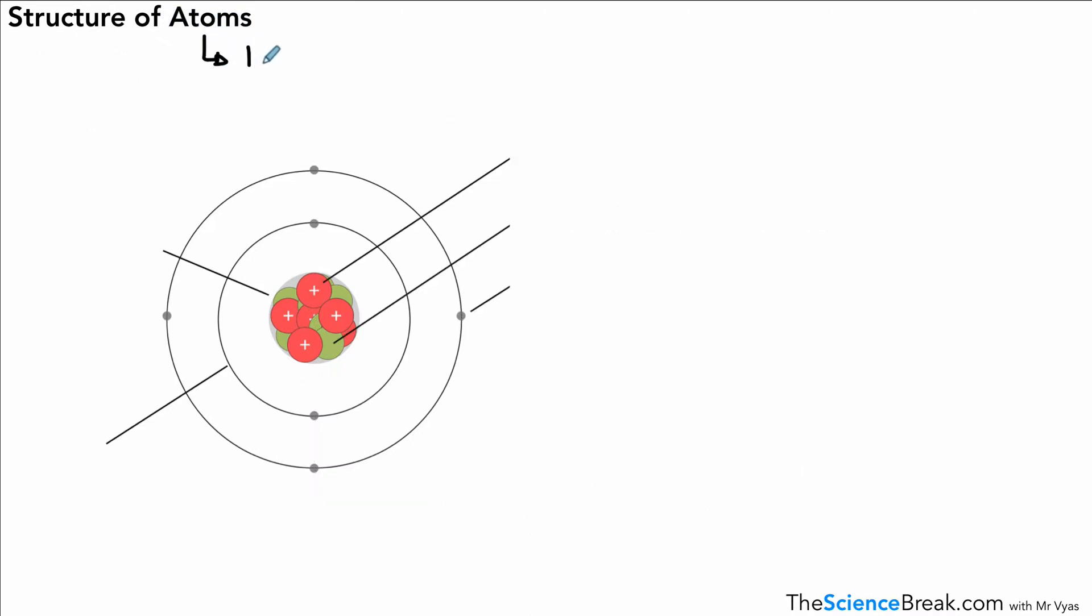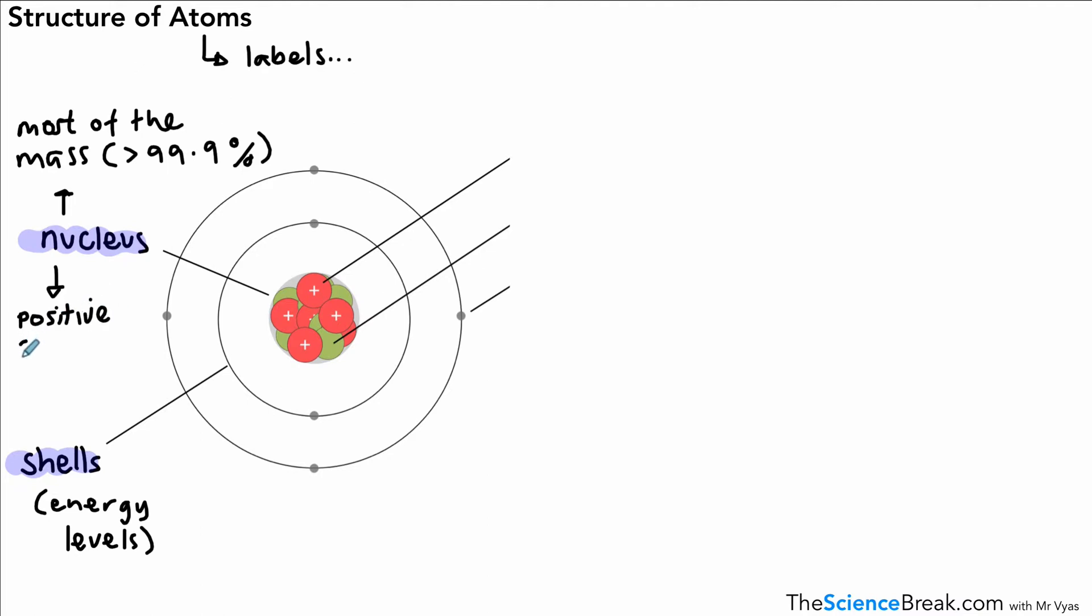We should be able to label atoms, and we have done this before in our chemistry videos. In the center of the atom we have our nucleus, and around the outside we have shells, and those shells we can also refer to as energy levels. The nucleus contains most of the mass of the atom. It contains over 99.9% of the mass of the atom, and it's all concentrated in that little nucleus there. The other thing about the nucleus is it's made of protons and neutrons, and the protons have a positive charge, so the whole nucleus in fact has a positive charge.